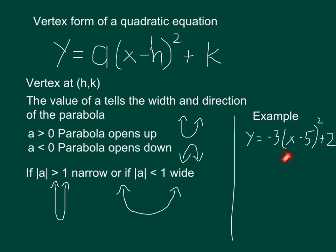So let's take a quick look at the example over here. First of all, we know the vertex is going to be (5, 2). Remember, the h, whatever is here, is the x-value of the vertex.